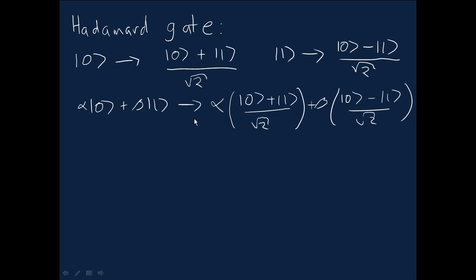And that's a bit of a mess. So we collect up all the terms for the zero, giving an amplitude of (α + β)/√2 for |0⟩, and (α - β)/√2 for |1⟩.